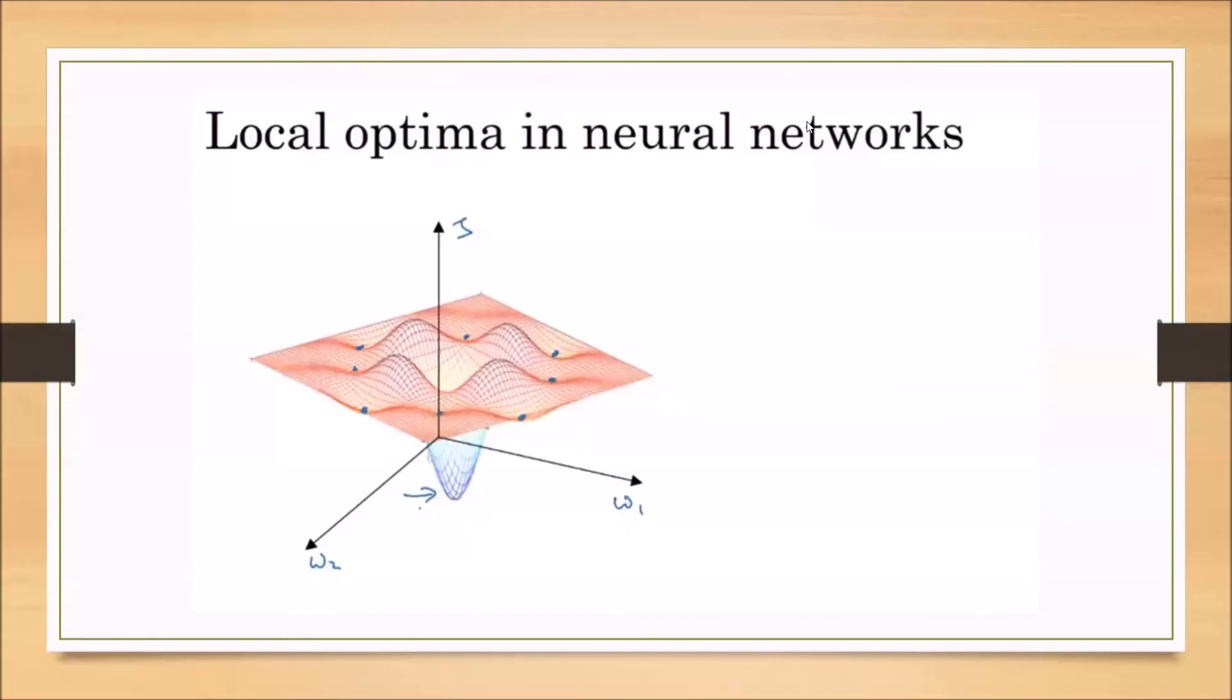When we discuss the local optima problem in machine learning, generally this diagram comes to mind. We are taking two parameters, w1 and w2, and